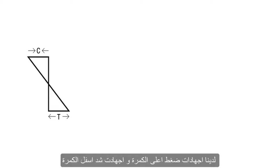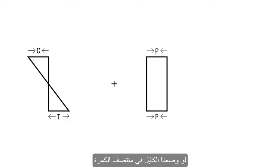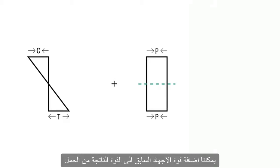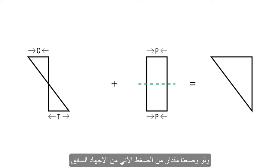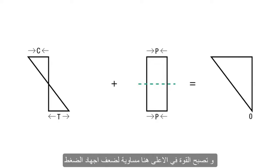We don't like these tension stresses, so what we do is induce some pre-stress into the beam. If we put the tendon in the middle of the beam, we induce a uniform compression across the beam. We can add the pre-stressing force to the force from the load, and if we make the compression from the pre-stress equal to the amount of tension, we end up with zero stress at the bottom and a force at the top equal to two times the compressive stress c.